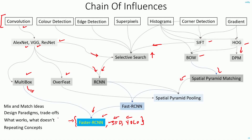Many of the concepts are repeating themselves or resurfacing in a different form. For example, when discussing SIFT we saw that it works on the basis of sparse sampling based on interest point detection, while the HOG detector works on dense sampling. Similarly, OverFeat works on dense sampling and R-CNN on sparse sampling, and then Faster R-CNN uses a combination of both dense and sparse sampling.